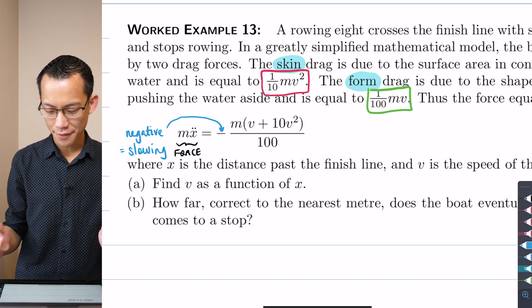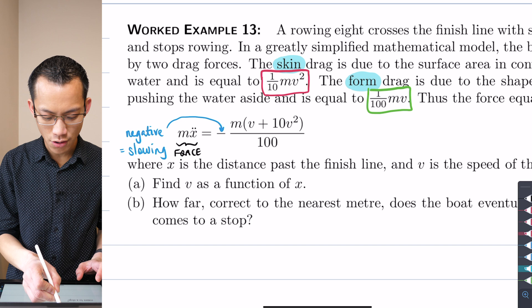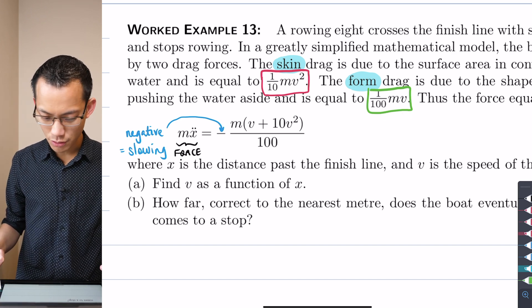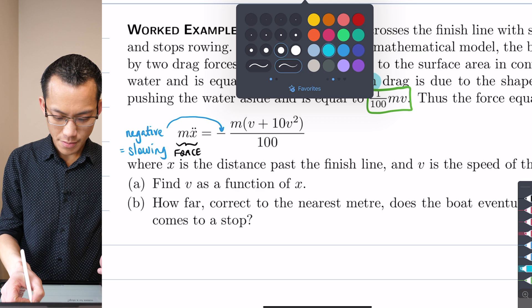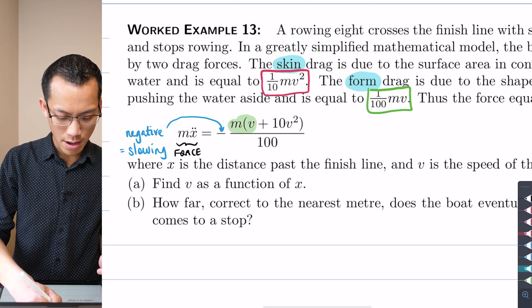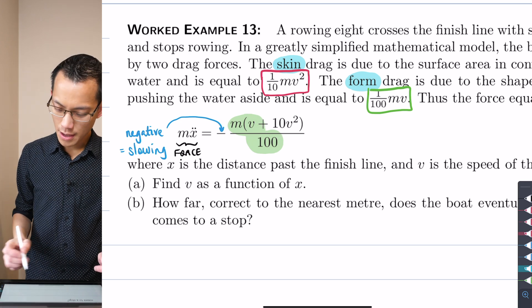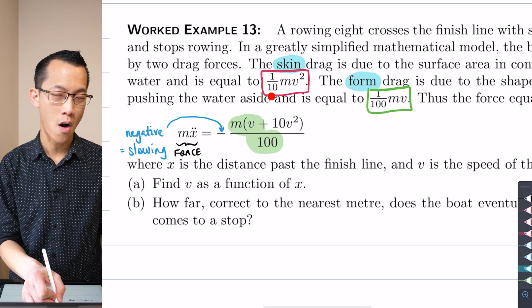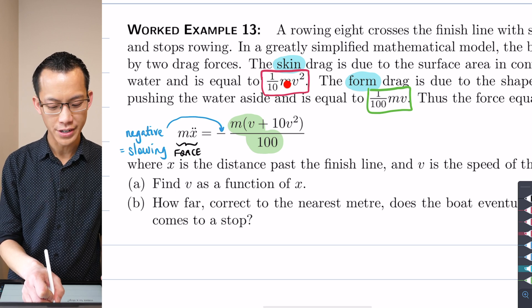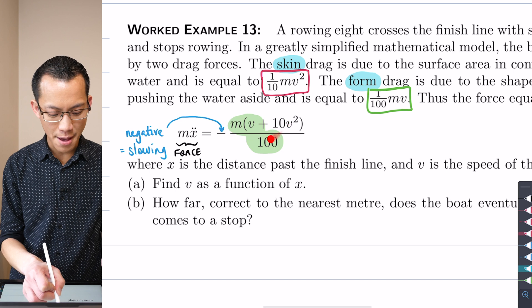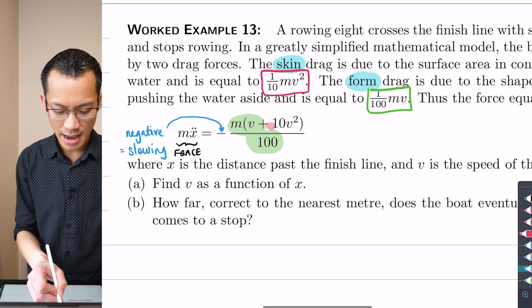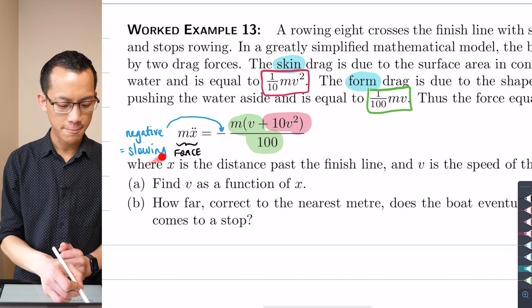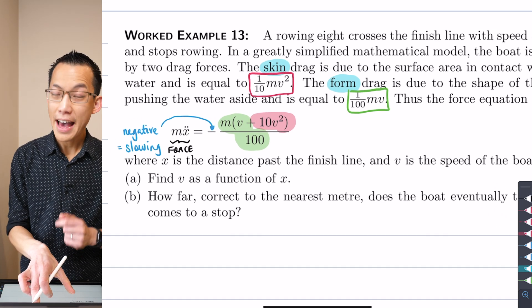Then if you have a look carefully, you've got this MV on 100. So where does that come from? That's the form drag, you can see there. So I'm going to highlight that in green. So there's the MV on 100, that's where that comes from. And then you've got this 1 over 10 MV squared. So if you got the same denominator, 1 over 100, then you'd have a 10 up the top, 10 over 100. So 10 MV squared, and that M has already been factorized out, you can see there in front of the brackets. So that's why this 10 V squared is what you get from the skin drag. So those two things are just combined together, and they're both slowing us down. So that's why it's negative. That is the force equation.